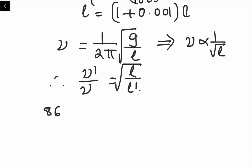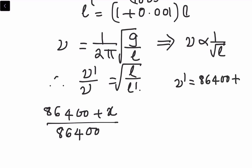86,400 plus let x be the error divided by original 86,400. The incorrect number of seconds per day nu dash will be equal to original 86,400 plus the error which is x. Therefore nu dash is the new frequency: 86,400 plus x, where x is the error.